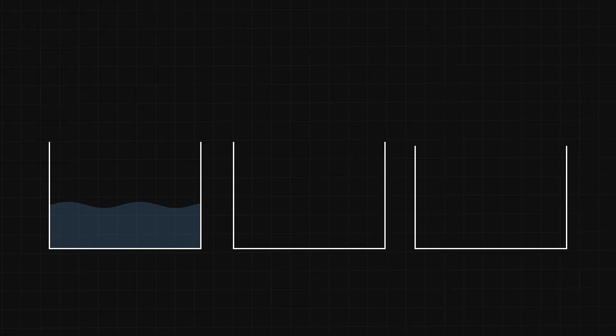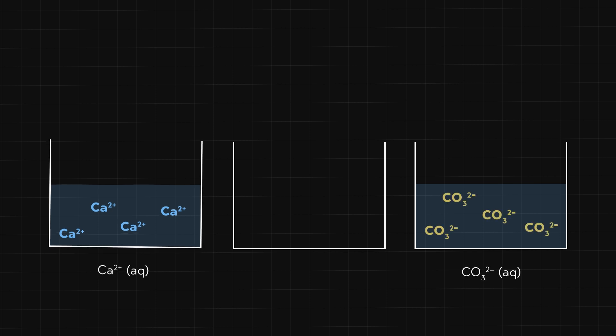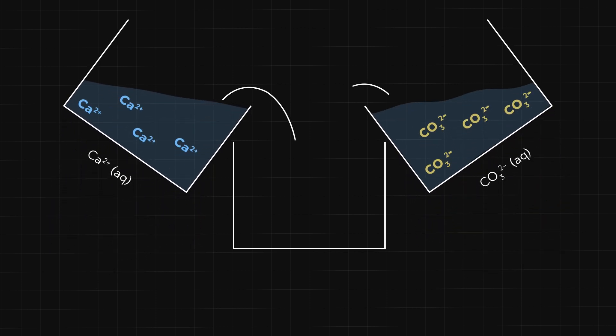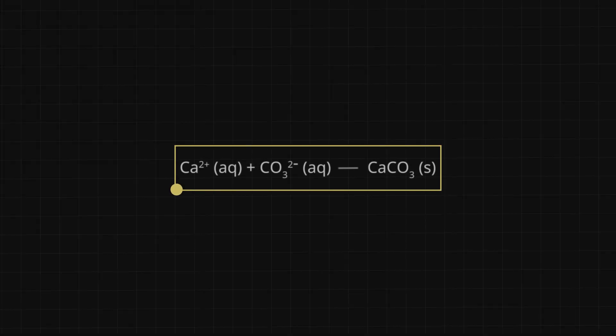How can we end up with too much in a solution? This can happen when we mix two solutions — one with a lot of calcium and one with a lot of carbonate. When mixed, there is more calcium and carbonate than the water is willing to hold. So calcium and carbonate react to form solid calcium carbonate via the precipitation reaction. This is one way to write a precipitation reaction. It is called the net ionic equation because it focuses in on the net effect of the reaction on the chemical species.